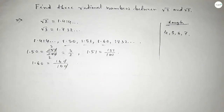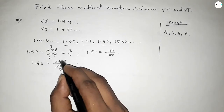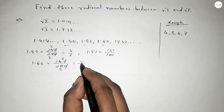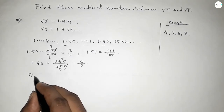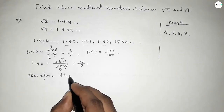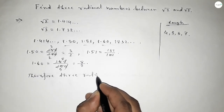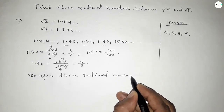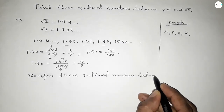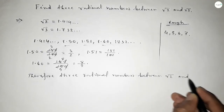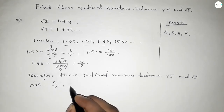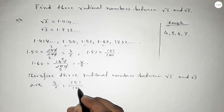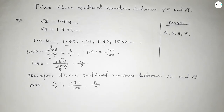Now simplifying 160 over 100 — dividing both numbers by 20, this gives 8 over 5. Therefore the three rational numbers between root 2 and root 3 are: 3 over 2, 151 over 100, and 8 over 5. This is the process to find out three rational numbers between root 2 and root 3.